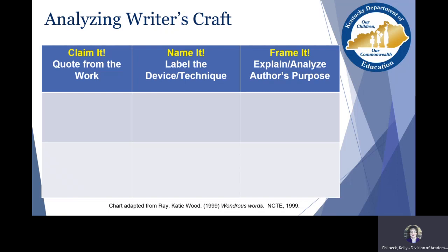Naming it means using the language of writers — not just saying 'this is evidence' but specifically what are we going to call it using the language of professional writers and authors. Then in the final column we want to go beyond identifying and naming — we want to explain and analyze the purpose. This last column focuses on guiding principle six: explaining the author's purpose and analyzing their perspective, point of view, and purpose.